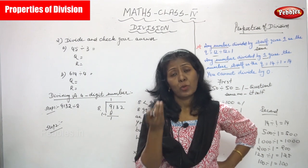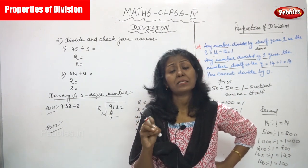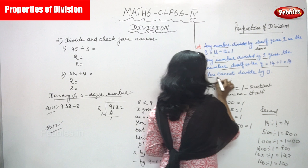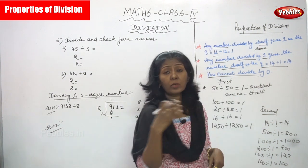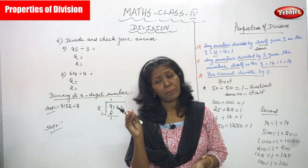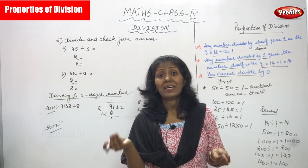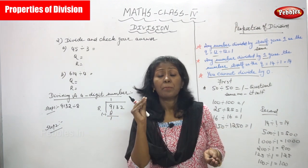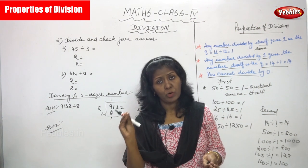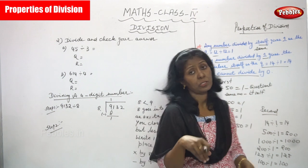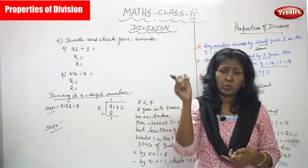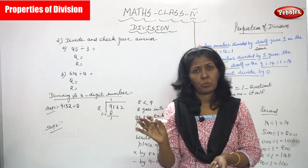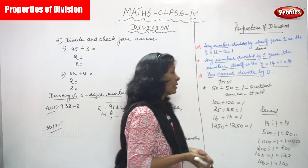You cannot divide by 0. For example, 100 divided by 0 — you cannot define it. It is not measurable. Any number divided by 0 has no meaning; it is undefined. This is a major property: you cannot divide by 0.